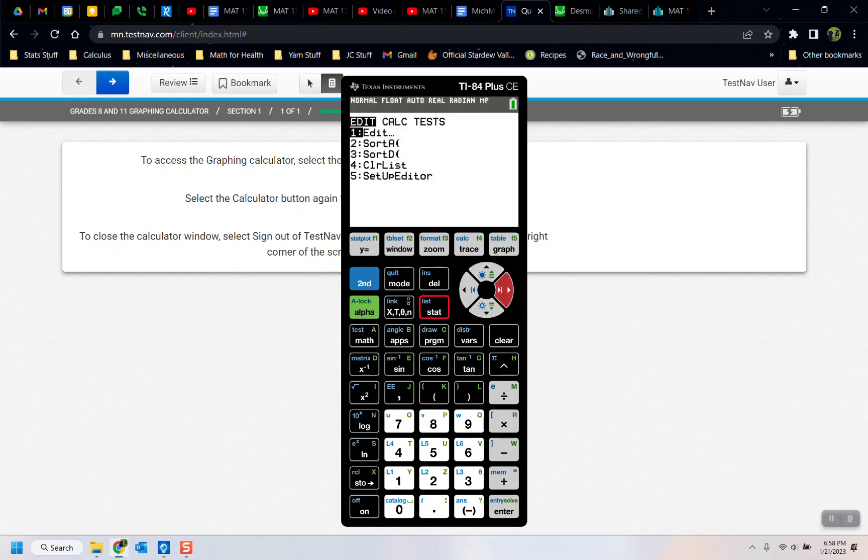Then you're going to go to Stat, go to the right to Calculate, pick number 4 (or technically number 8 would work), List 1, List 2, go down to Calculate, press Enter. The R-squared value is right there: 0.473. It's the third from the... second from the bottom line.